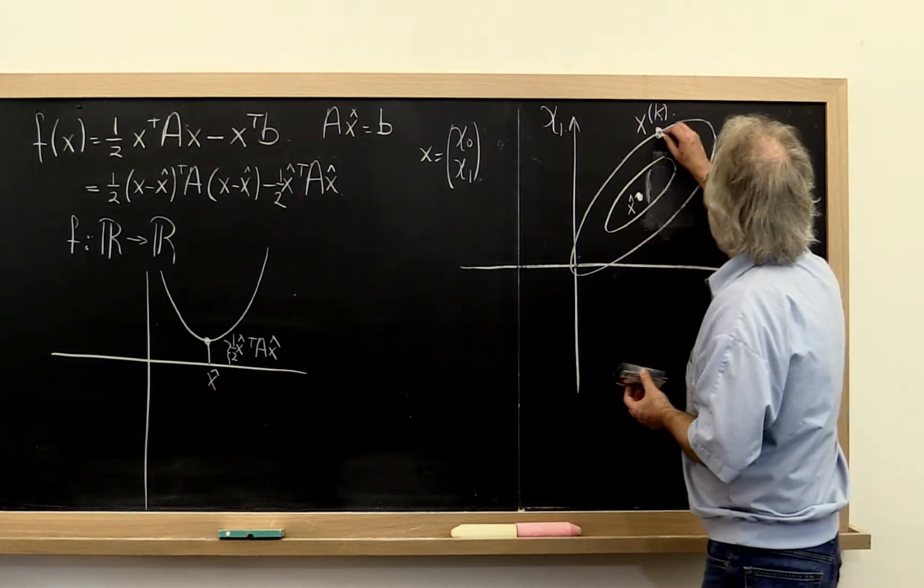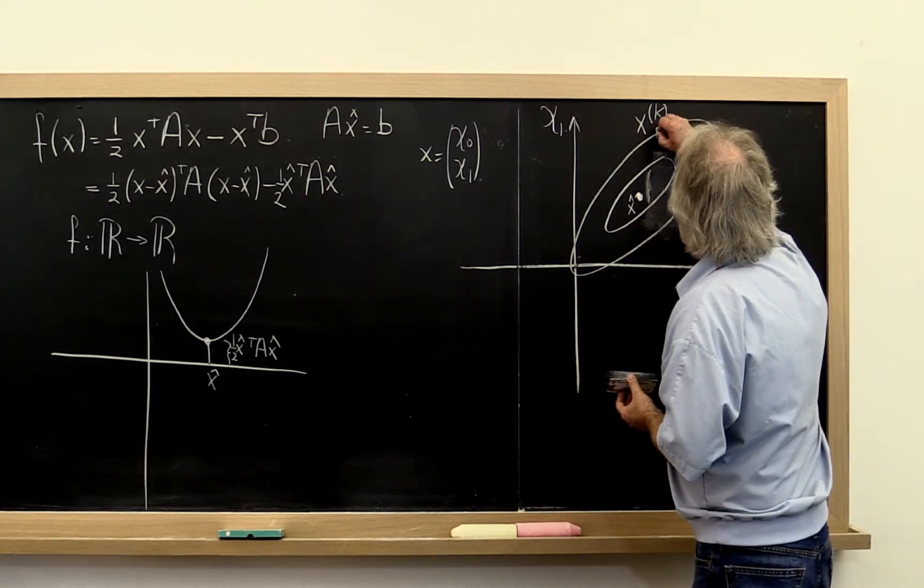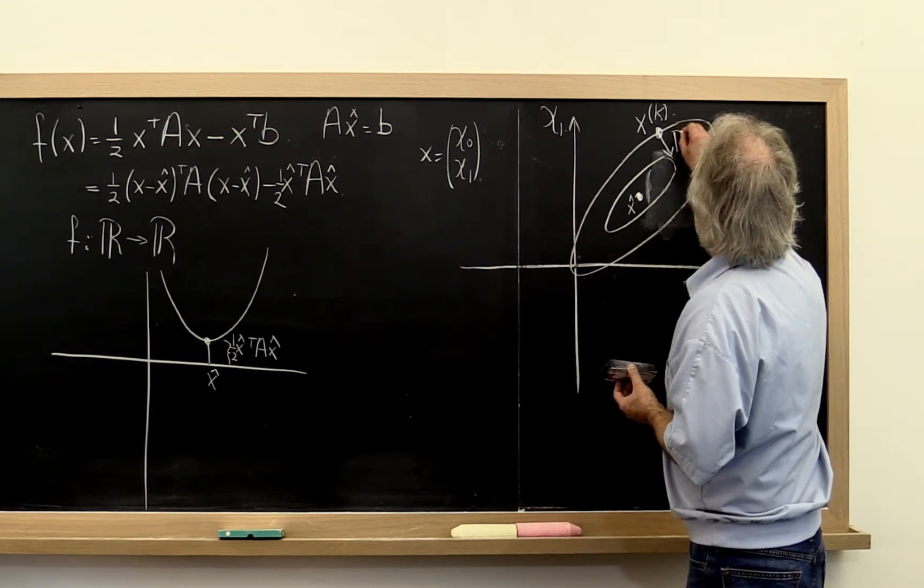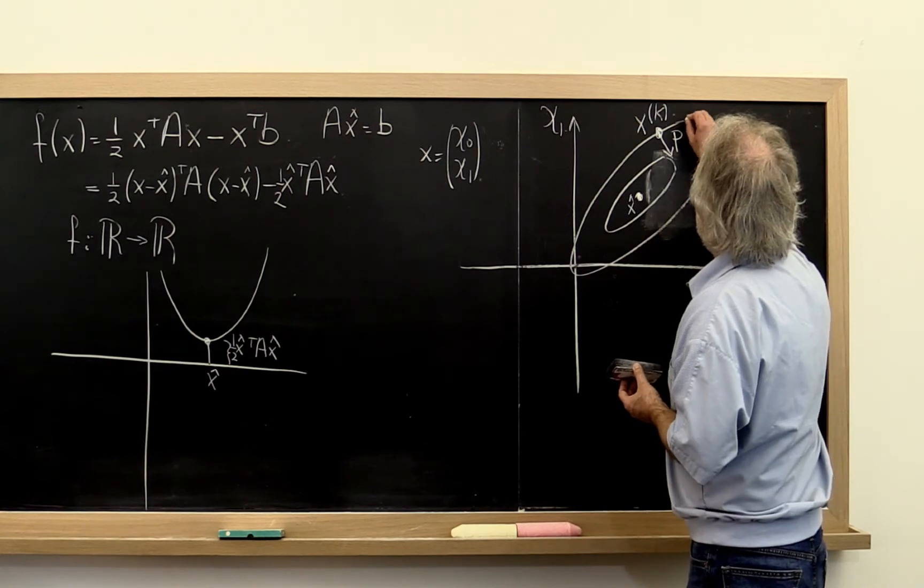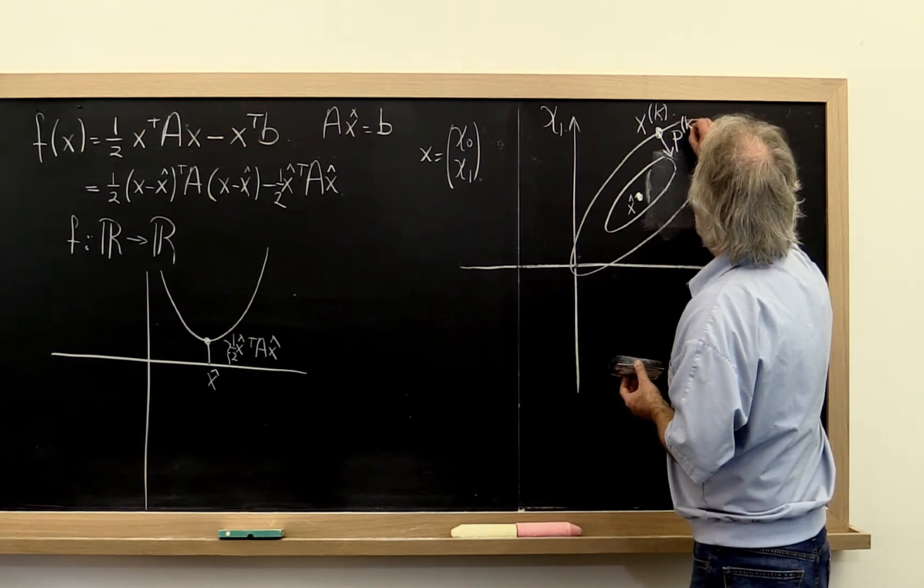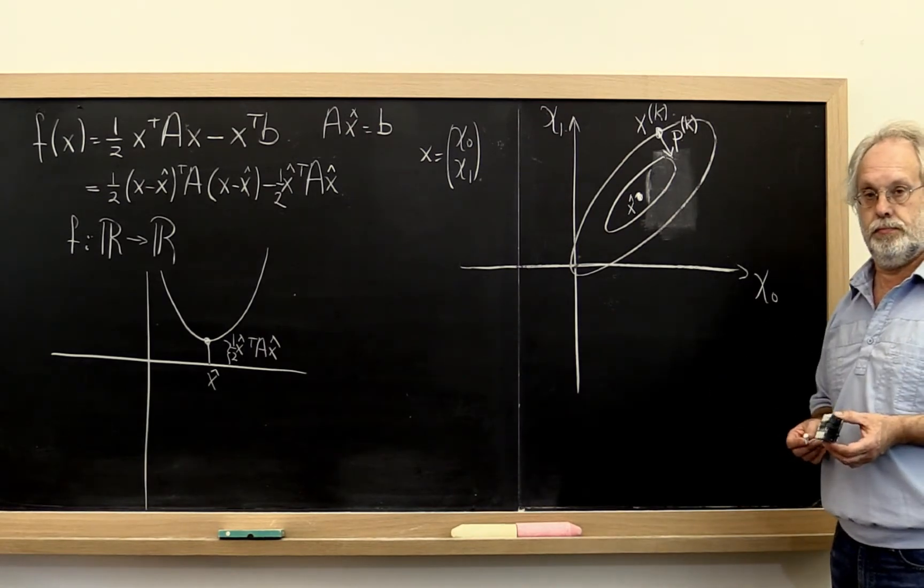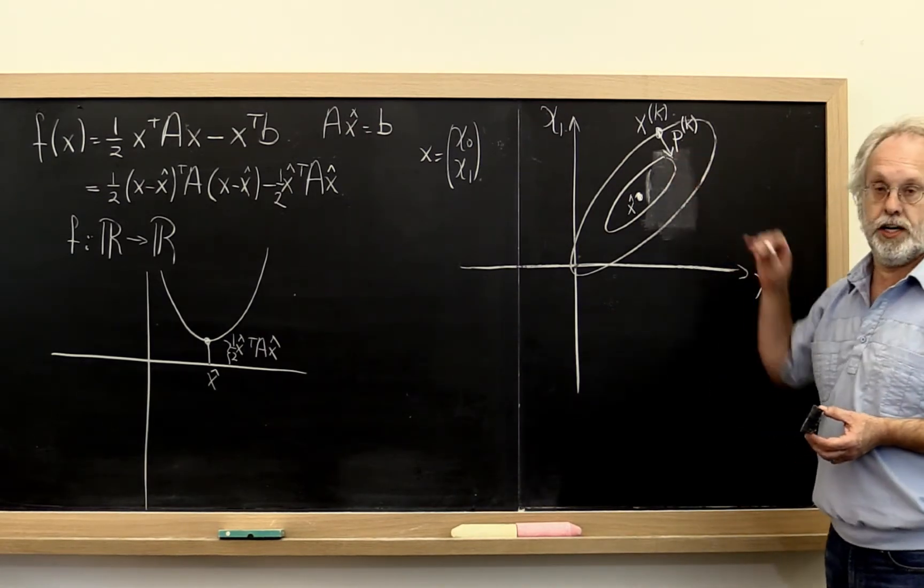So what if instead we pick some direction? Let's call that direction p sub k or p super k. It is the direction in the current iteration. Okay? It's known as the search direction.